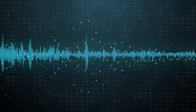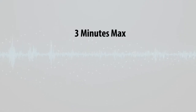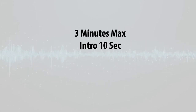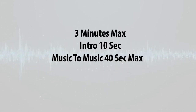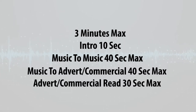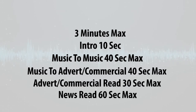So the radio demo structure looks like this. It's three minutes maximum — that's also three megabytes or less. The parts should include: firstly, an introduction of 10 seconds; secondly, a music-to-music link of 40 seconds; thirdly, a music-to-advert link of 40 seconds; fourthly, an advert or commercial read of 30 seconds maximum; and finally, a short news read of a maximum of one minute.